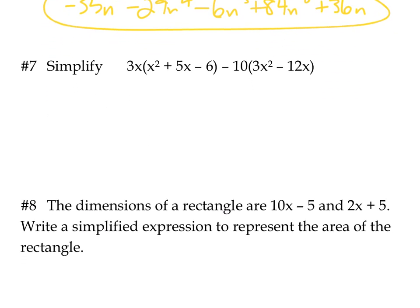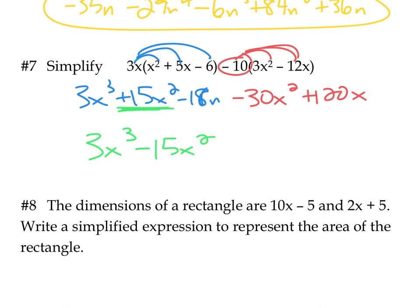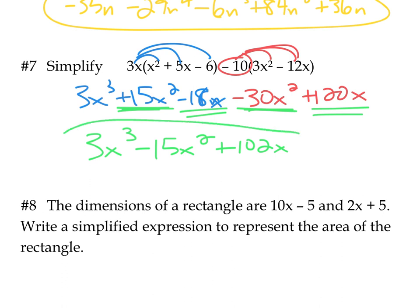Number 7 looks a little different, but it's still just the distributive property. Distributing 3x into the parentheses gives 3x³ plus 15x² minus 18x. Then distributing negative 10 — that's the key, make sure we're distributing a negative — gives negative 30x² plus 120x. Looking for like terms: 3x³ stays as is, 15x² minus 30x² is minus 15x², and negative 18x plus 120x is plus 102x. Final answer: 3x³ minus 15x² plus 102x.